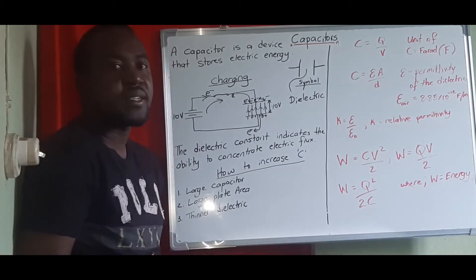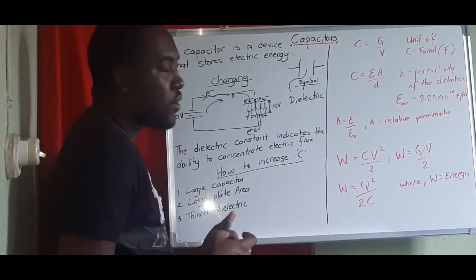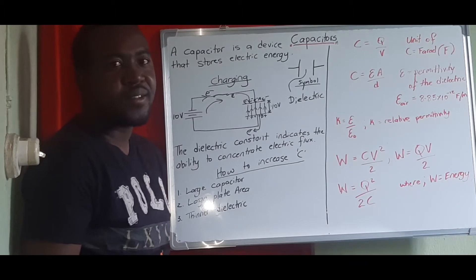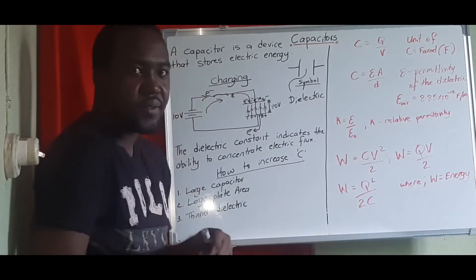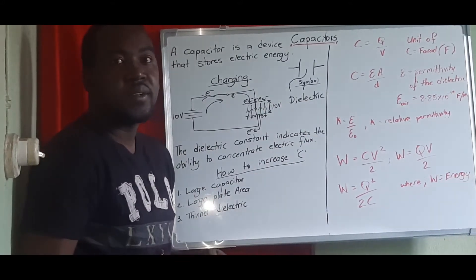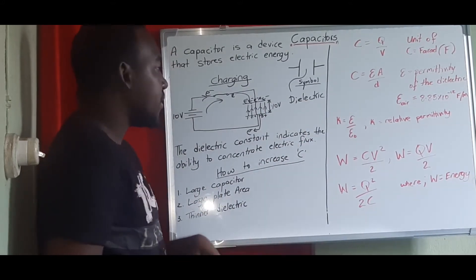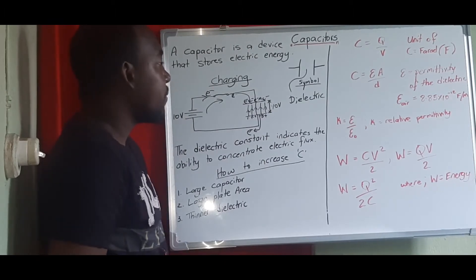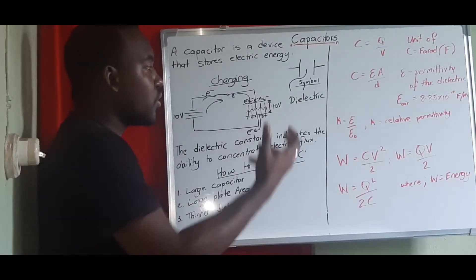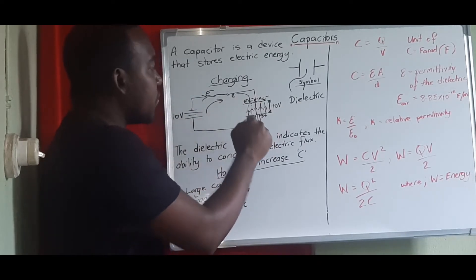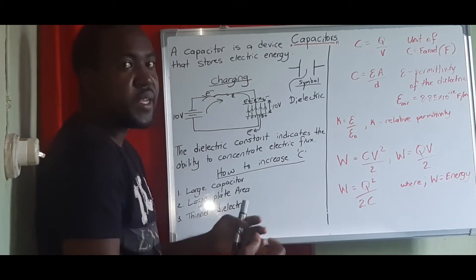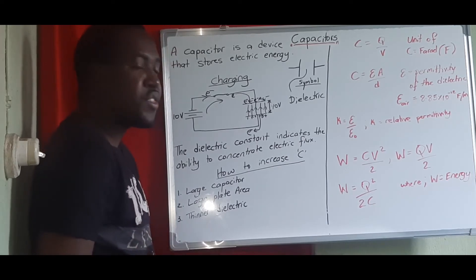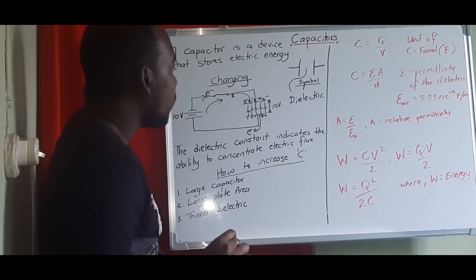To increase the capacitance of a capacitor — to store more energy — first, we can make a larger capacitor, which creates more electric field to store more charges. Also, we can increase the area of the plates, which gives us more charges to be stored — more electrons and more positive charges on those plates, giving us more electric field.